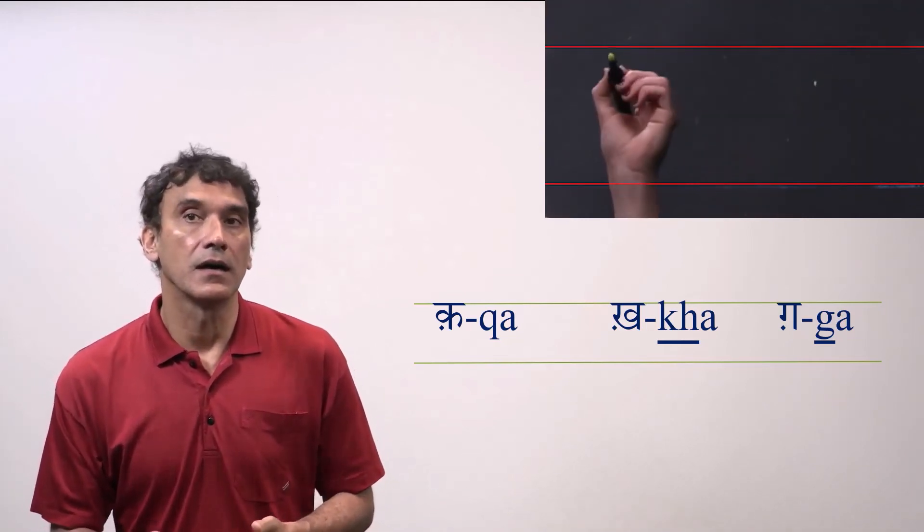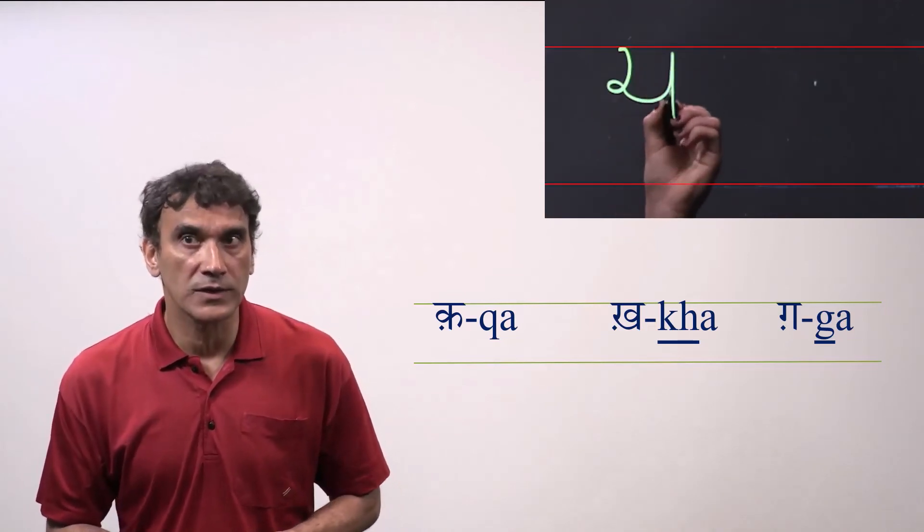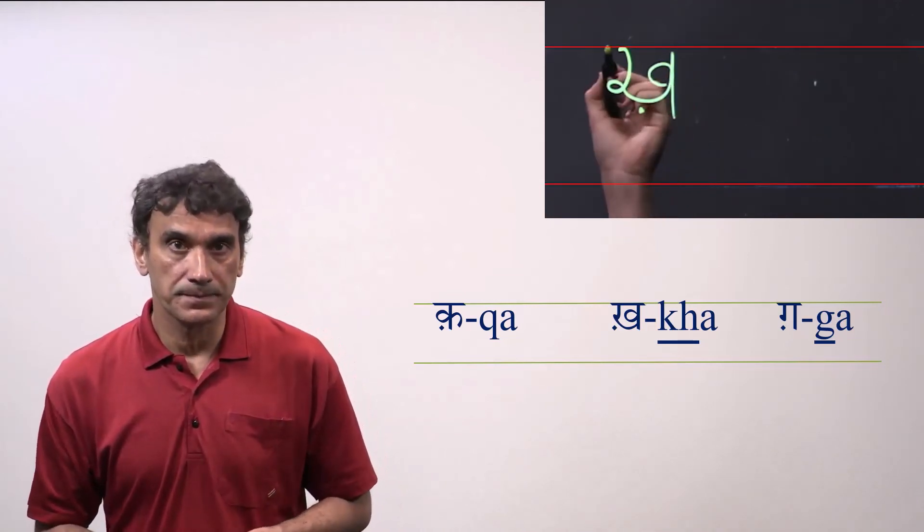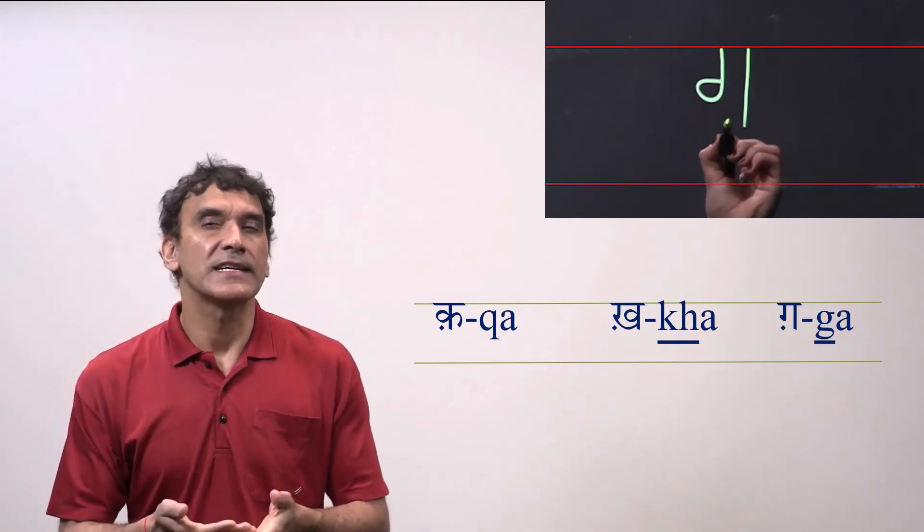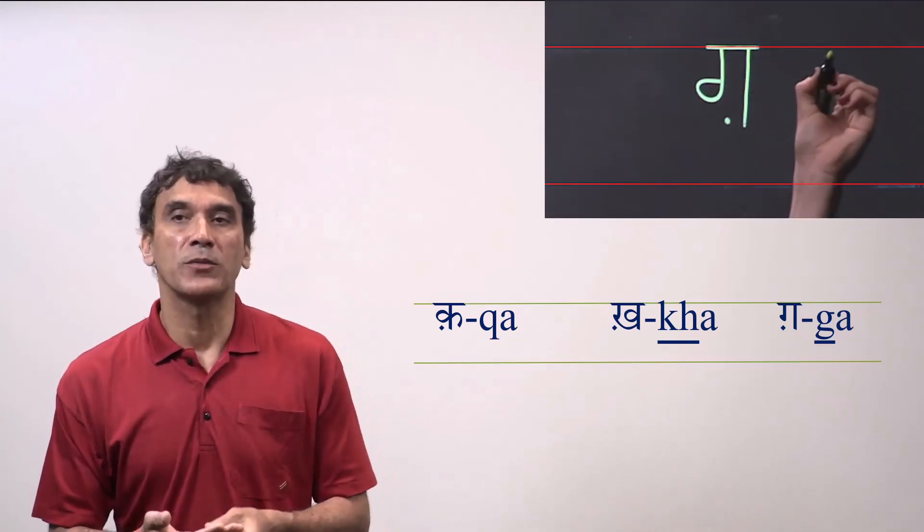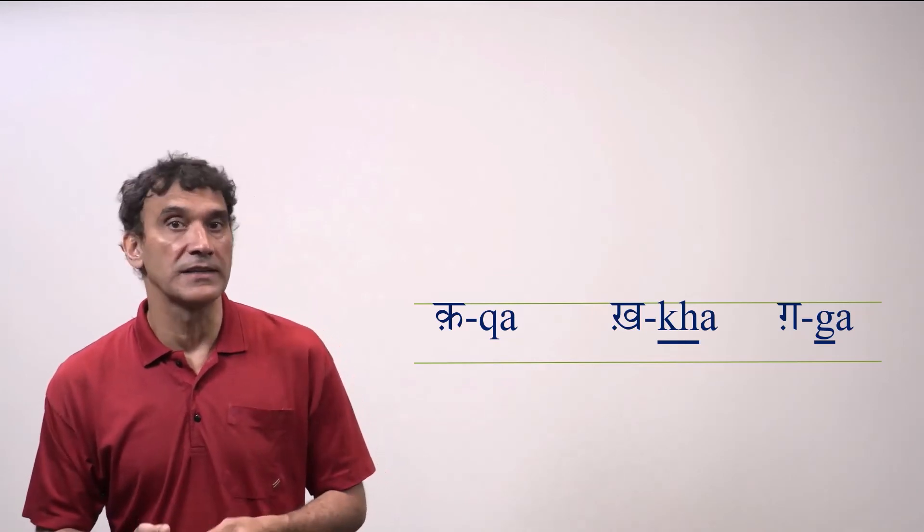The Q, Kh, G are written as velar consonants with a dot under them. You can see how they are written. Since they are extremely rare, do not worry about making a mistake while pronouncing them or writing them.